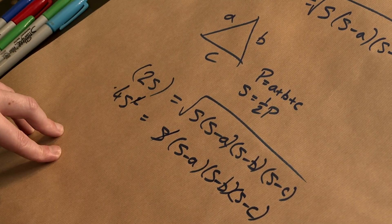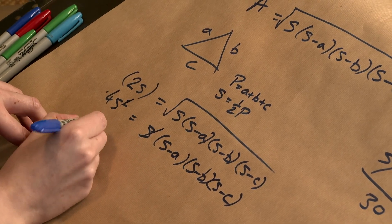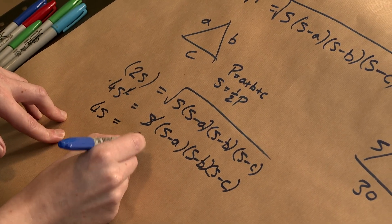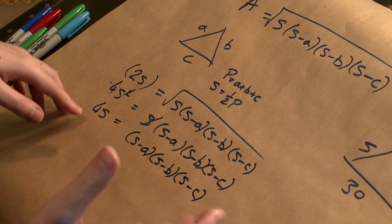And then we can divide by s, we've got s on both sides, so we get 4s equals s minus a, s minus b, s minus c, little formula.